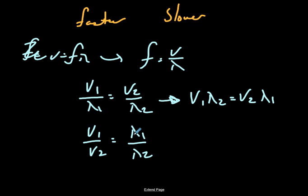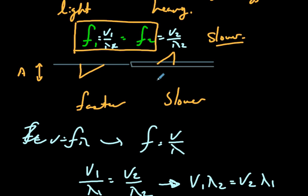In other words, if the frequency is the same and the wave is slowing down, it must have a shorter wavelength to maintain the same frequency. It's like a train: if boxcars go by at five per second, on a slower train you need shorter boxcars to maintain that rate. This relationship applies to strings like a light-to-heavy slinky, but also to light, sound, and ocean waves.